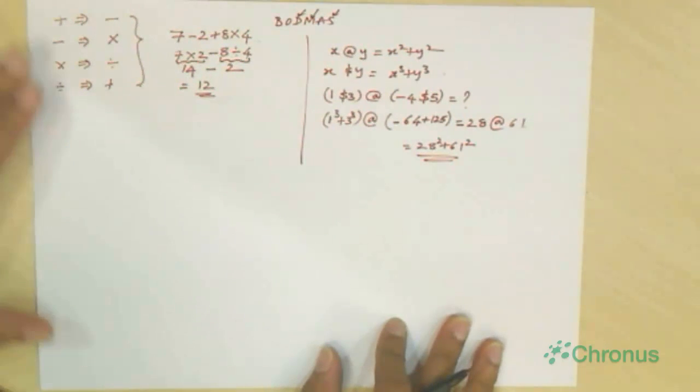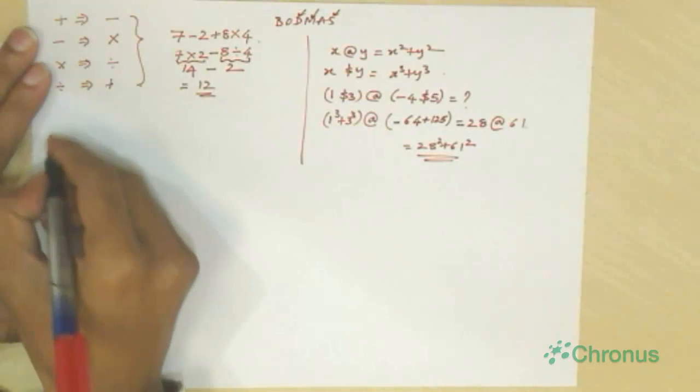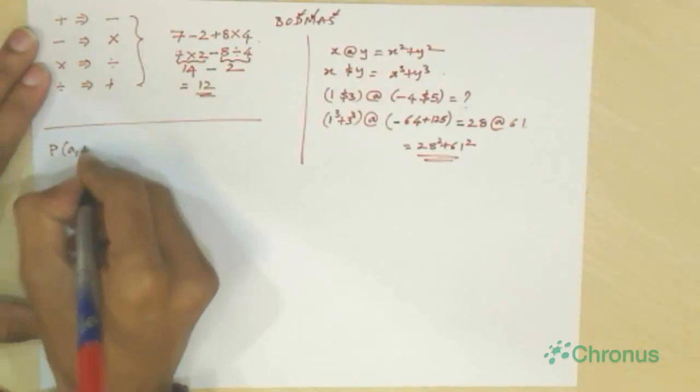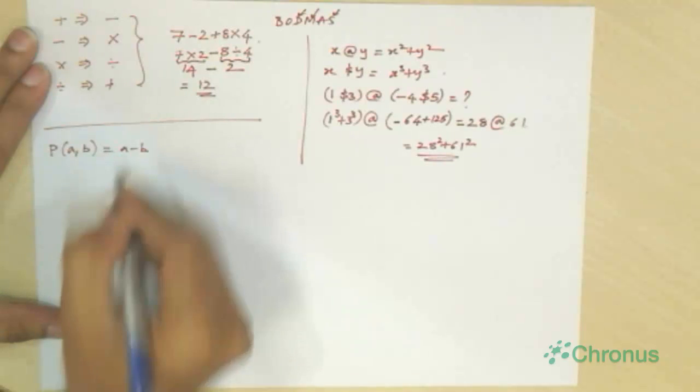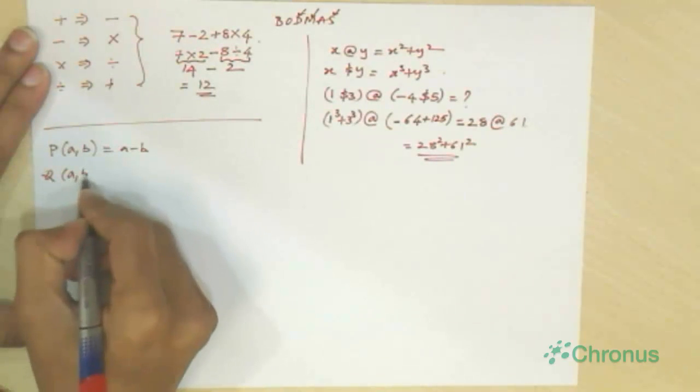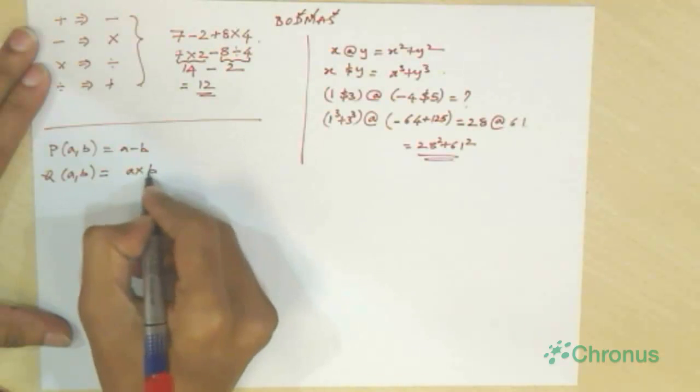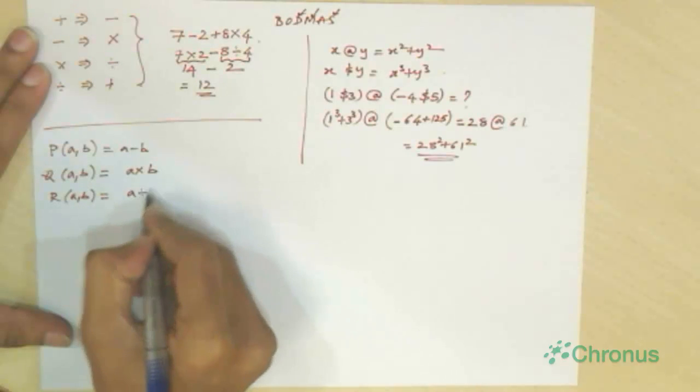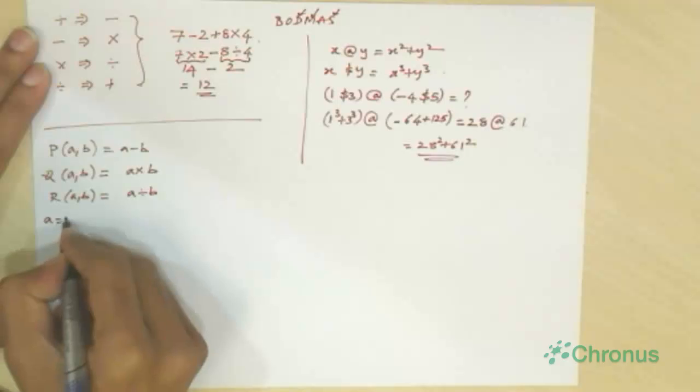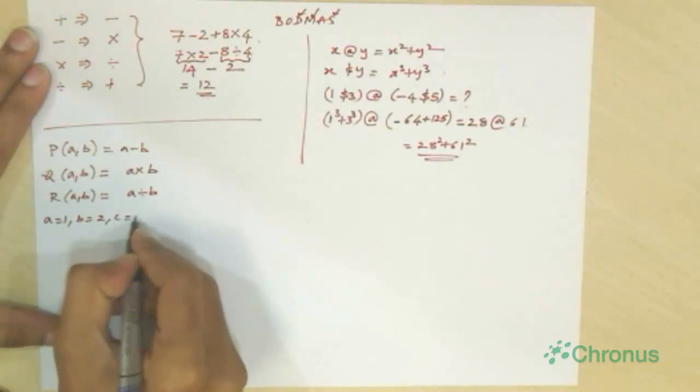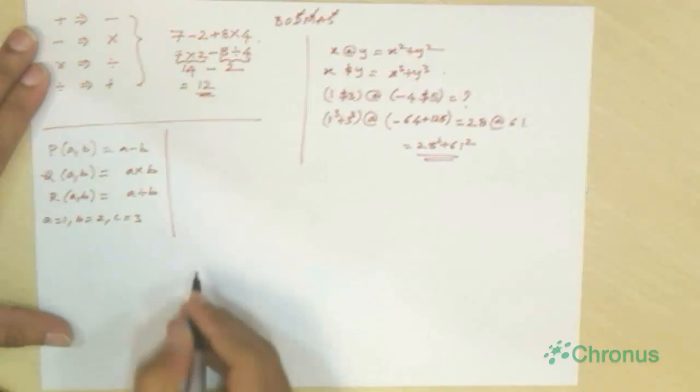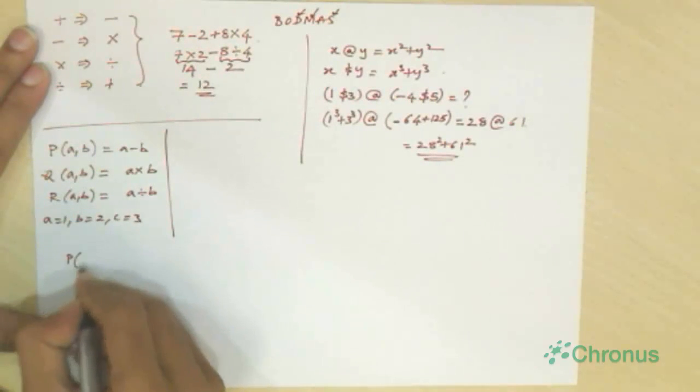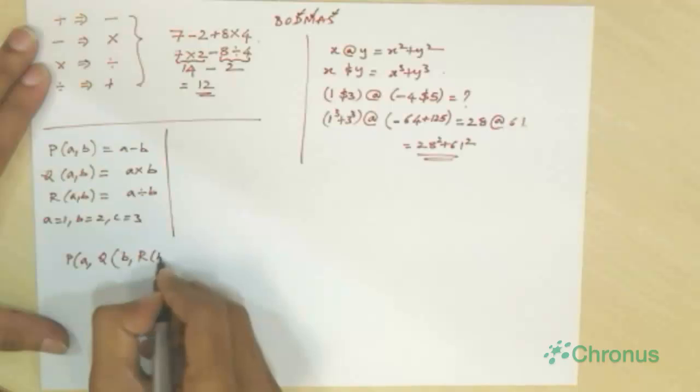And another kind of problem which we can have is like this. If p of a comma b is equal to a minus b. If q of a comma b is equal to a into b. If r of a comma b is equal to a divided by b. And a equal to 1, b equal to 2, c equal to 3. Then, find p of a comma q of b comma r of b comma c.